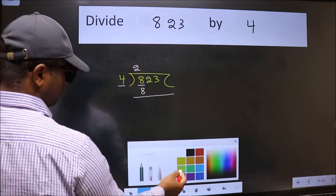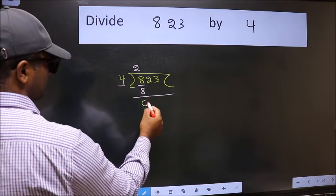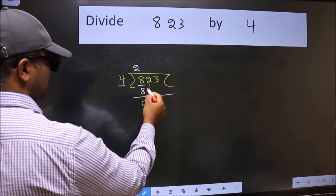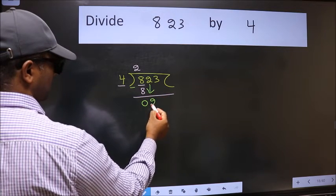Now we should subtract. We get 0. After this bring down the beside number. So 2 down.